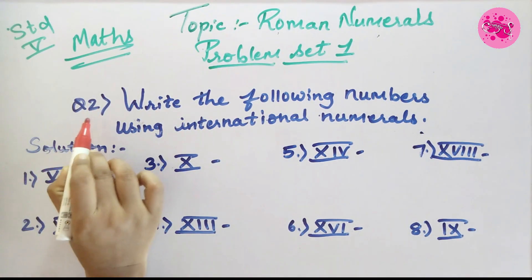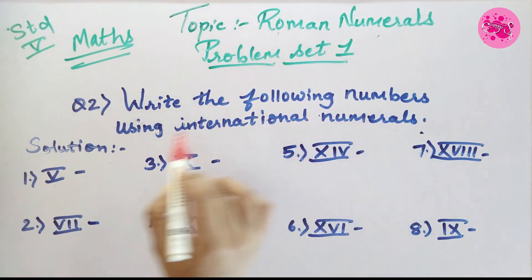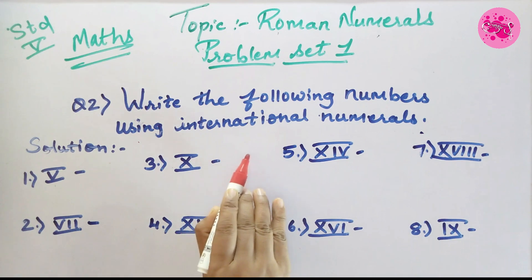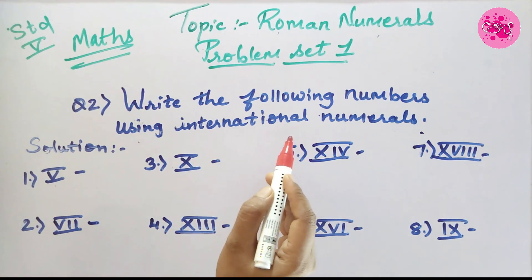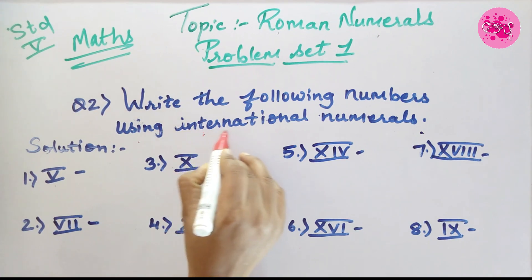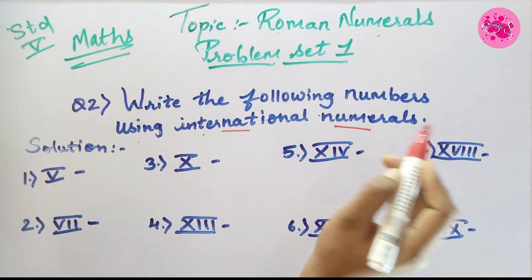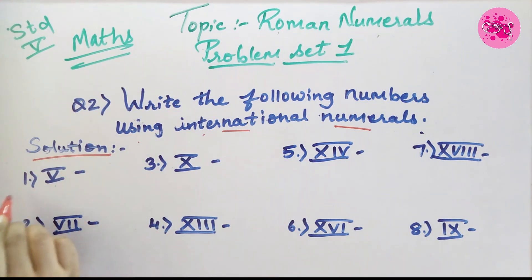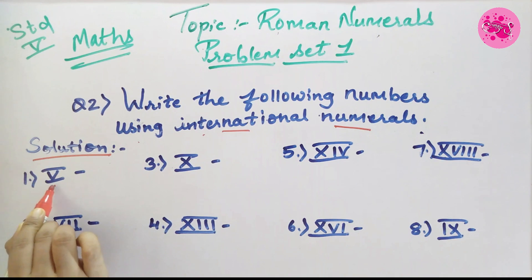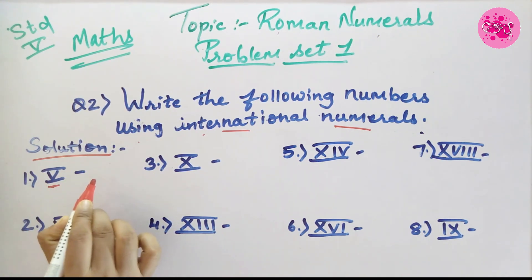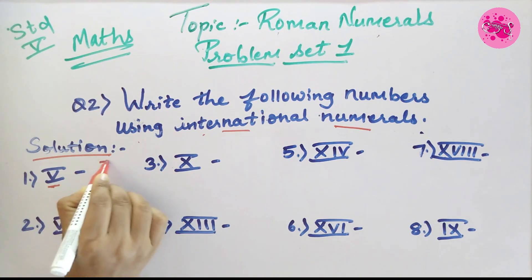Question number 2: Write the following numbers using international numerals. In this question, Roman numerals are given and we have to convert them into international numbers. Solution. Number 1: The Roman numeral V is given. V is the symbol of 5, so the answer is 5.